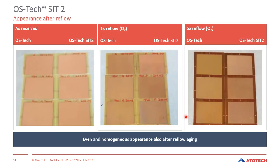We did tests with reflow aging. Here on the left is our standard OSP finish and on the right the OSTEC SIT2. This shows the appearance as received and then after one and five reflow cycles under oxygen atmosphere. The appearance is still very even — no shadowing or discolorations observed even after five times reflow aging. The appearance remains very homogeneous and even.